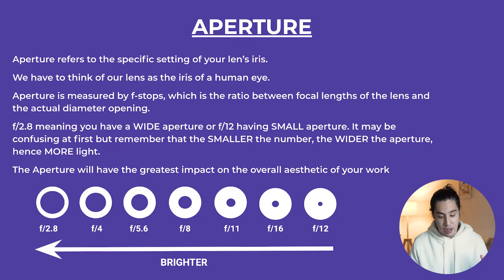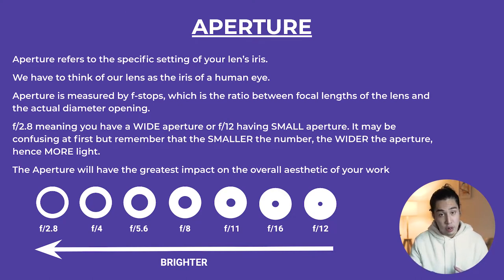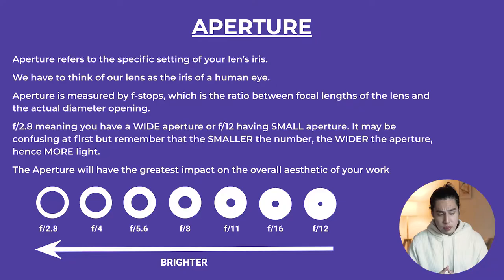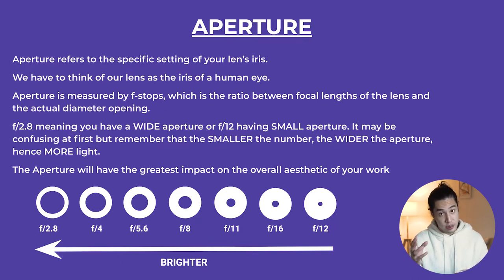The first component of the exposure triangle is aperture. The aperture refers to the specific setting of your lens's iris. We have to think of our lens like the human eye — like the iris of the human eye to be specific. Aperture is measured by f-stop, which is the ratio between the focal length of the lens and the actual diameter of the opening of the iris.